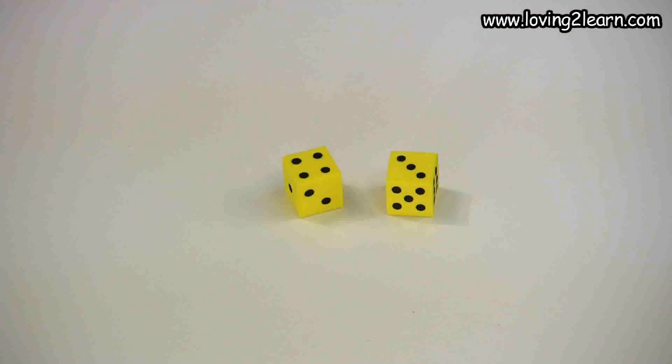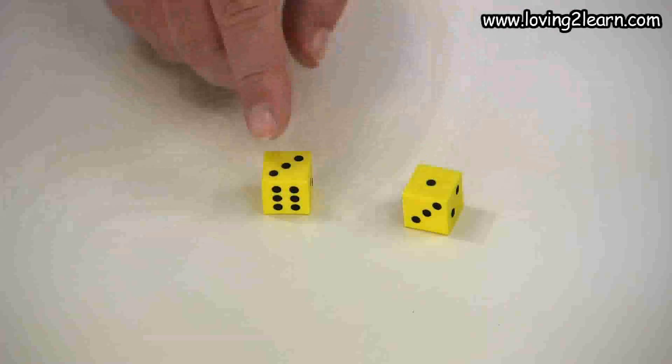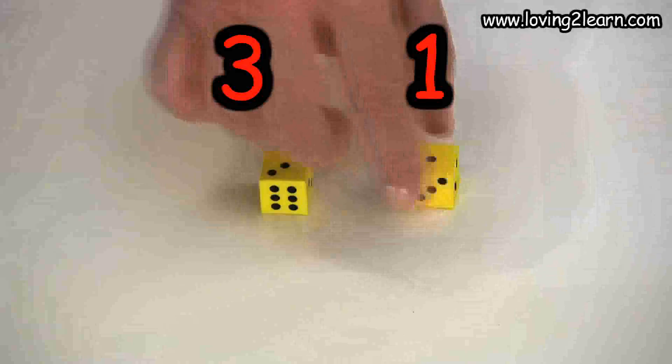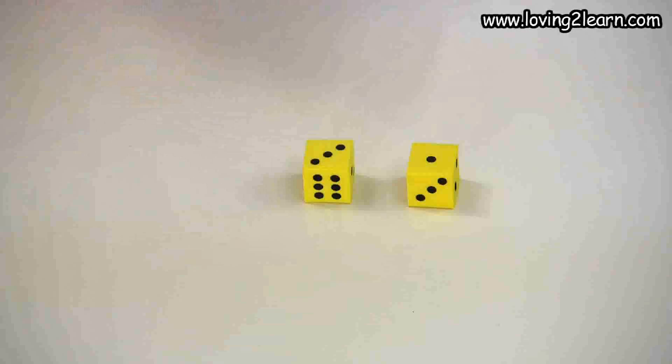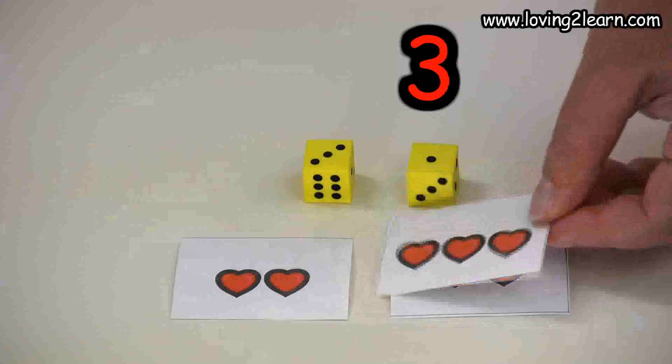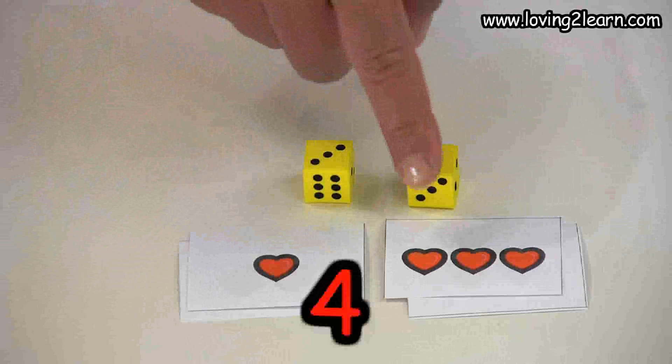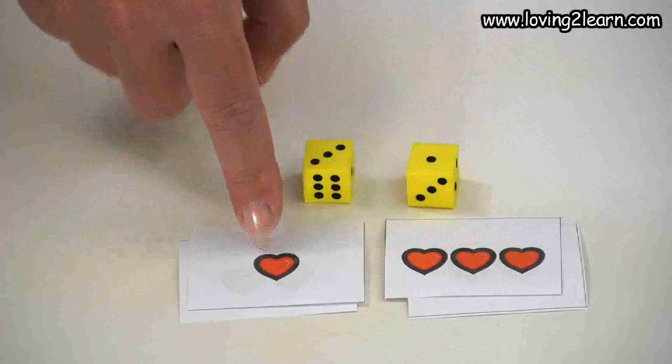We'll take those cards away and we'll roll the dice. There we have three and one, which will equal four. We can play two and two, which will equal four. We can do three and one, which will equal four. Three, four.